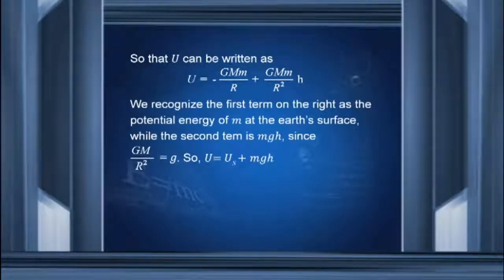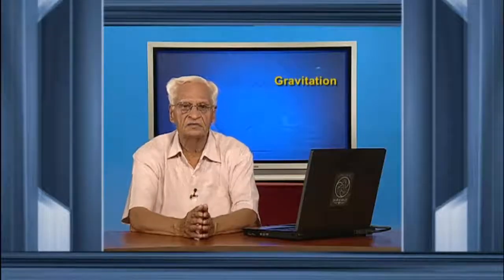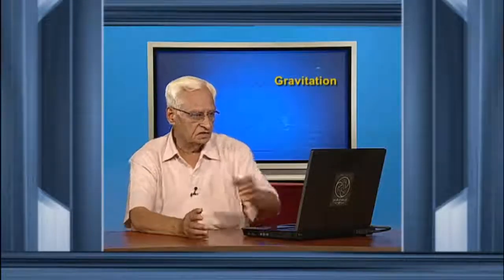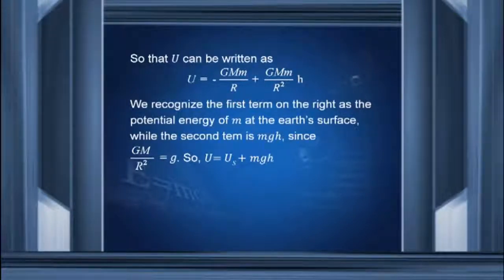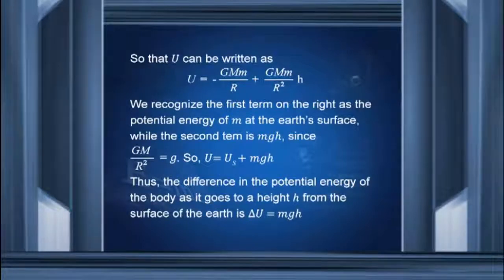We recognize the first term on the right as the potential energy of m at the earth's surface. This -GMm/R is the potential energy of mass m at the surface of the earth, and the extra term is mgh, because this GMm/R² equals mg. Therefore the extra term is mgh. Thus the difference in the potential energy of the body as it goes to height H from the surface of the earth is ΔU = mgh.